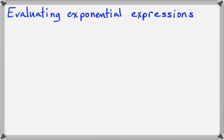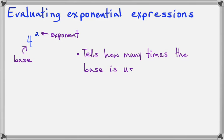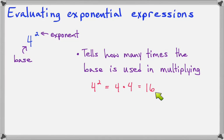In this lesson let's look at how to evaluate exponential expressions. This is our first look at exponents, and here's a really simple exponential expression. I have 4 to the second power, so 4 in this case is our base — it's a regular-sized number — and 2 is a little superscript number written in the corner, and this is called the exponent. The exponent just tells you how many times the base is used in multiplying. 4 squared means I have 4 times 4, which equals 16.